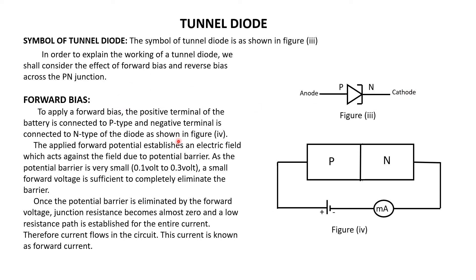Coming to forward bias, the main characteristic of the tunnel diode is in forward bias. When P-type of the diode is connected to positive of the battery and N-type is connected to negative of the battery, this connection is said to be forward bias.